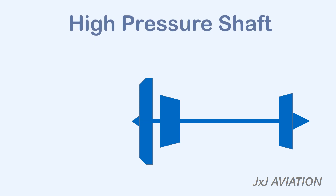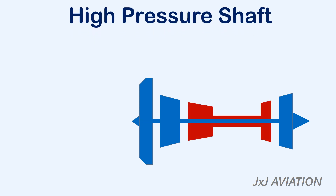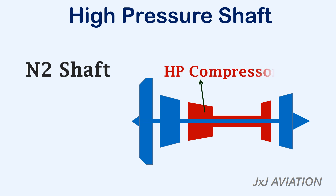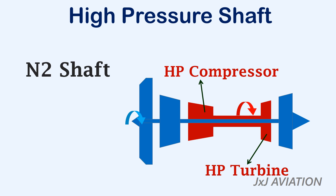The high pressure shaft, also called the N2 shaft, consists of a high pressure compressor and a high pressure turbine connected on a single shaft. This compressor is also an axial flow type. This shaft may be designed to rotate in the same direction as the low pressure shaft or in the opposite direction.